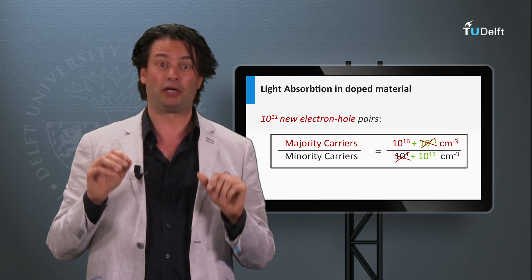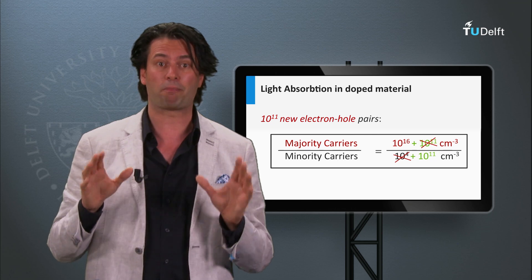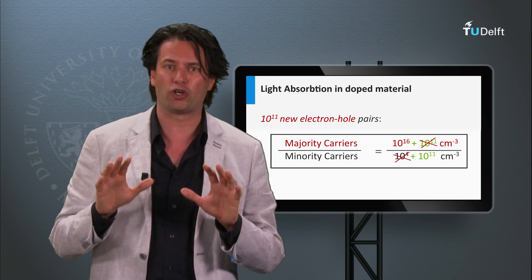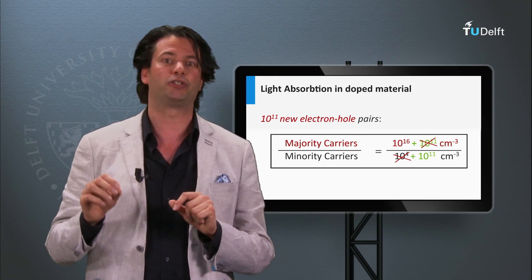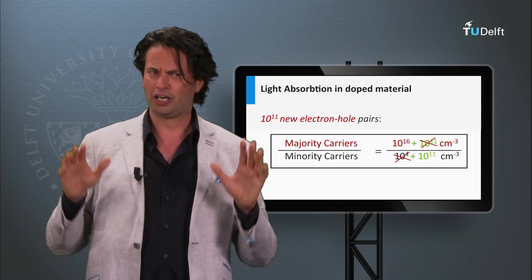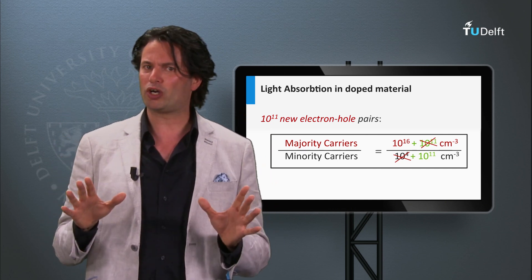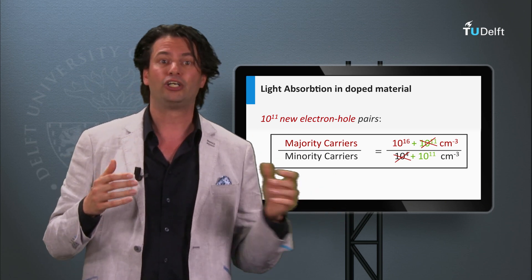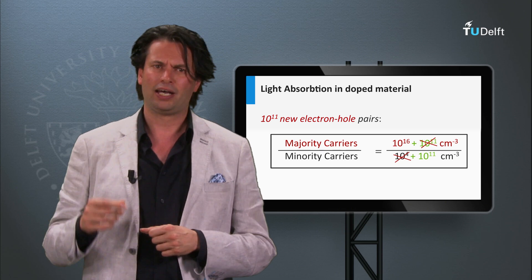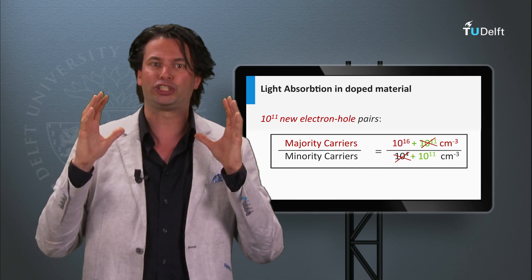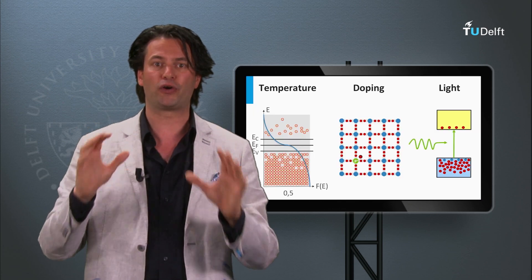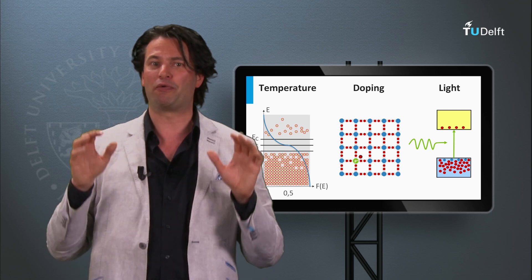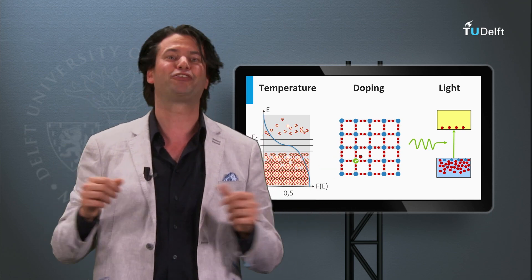This is an important conclusion which we will need later to understand the working principle of solar cells. In doped semiconductor materials, light absorption has only an effect on the density of the minority charge carriers. In summary, in this block we have discussed how to excite charge carriers in a semiconductor material by temperature, doping, and light absorption. The next question is how those charge carriers move around and what makes them move in a semiconductor material — I will talk about that in the next block, where we are going to discuss transport of charge carriers.